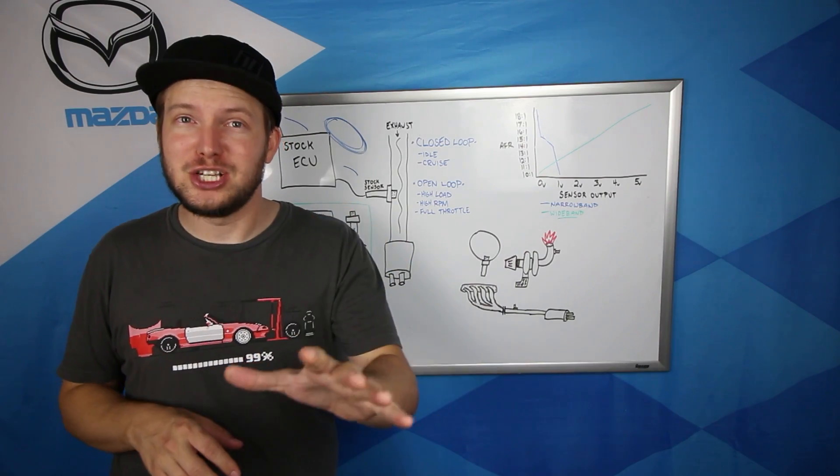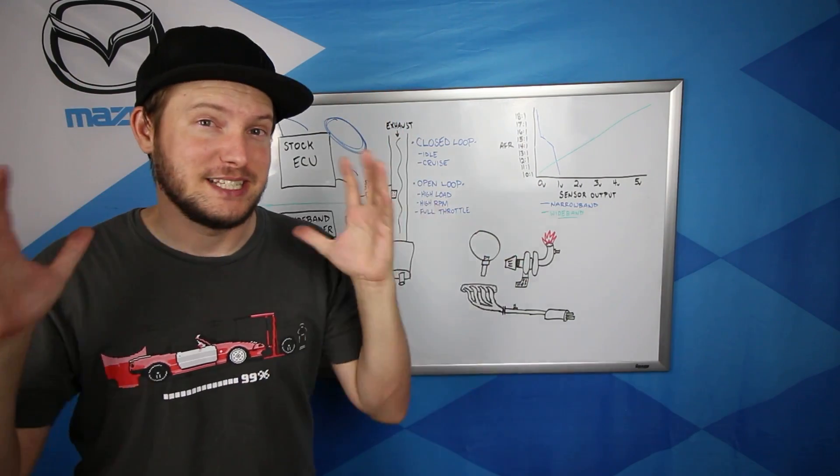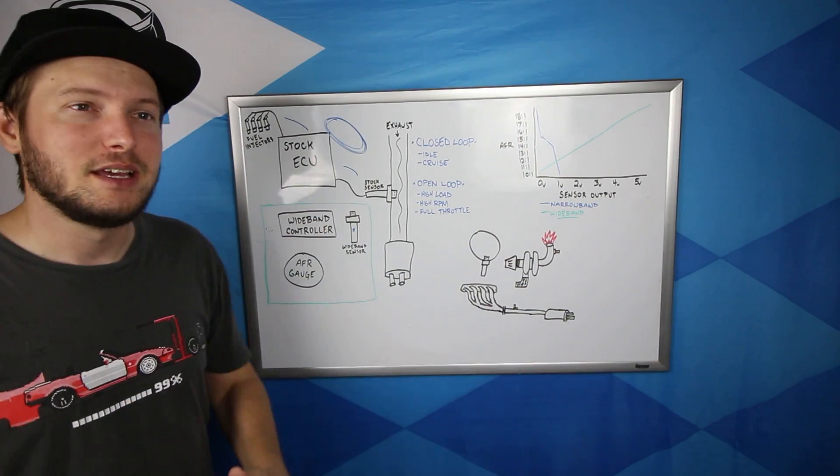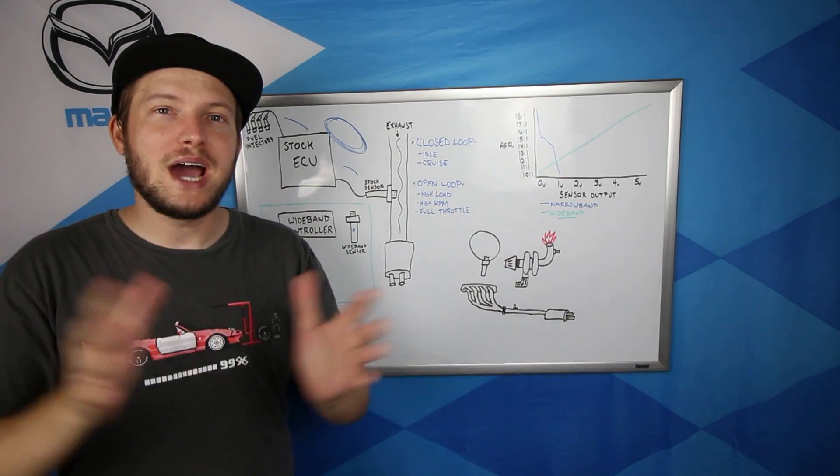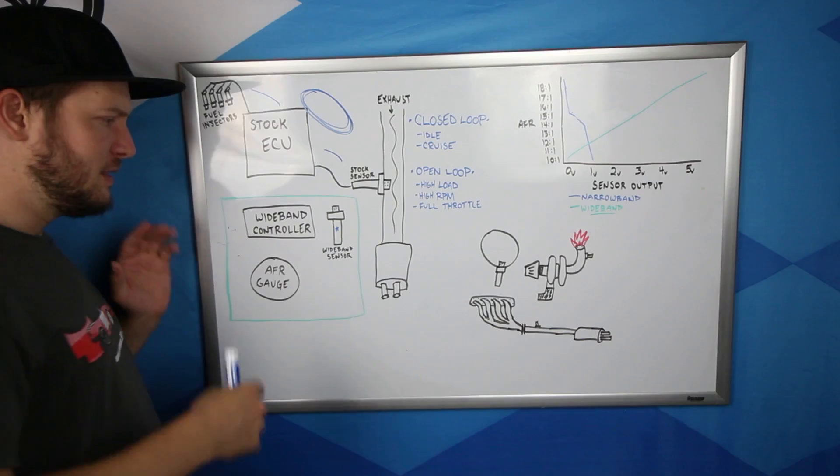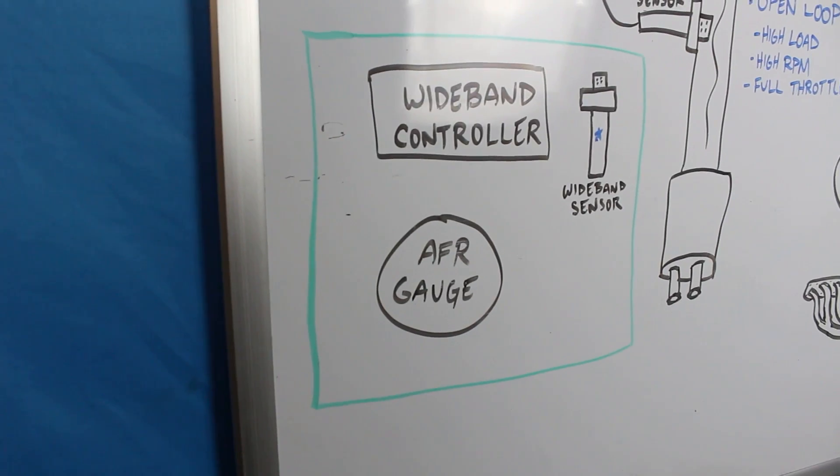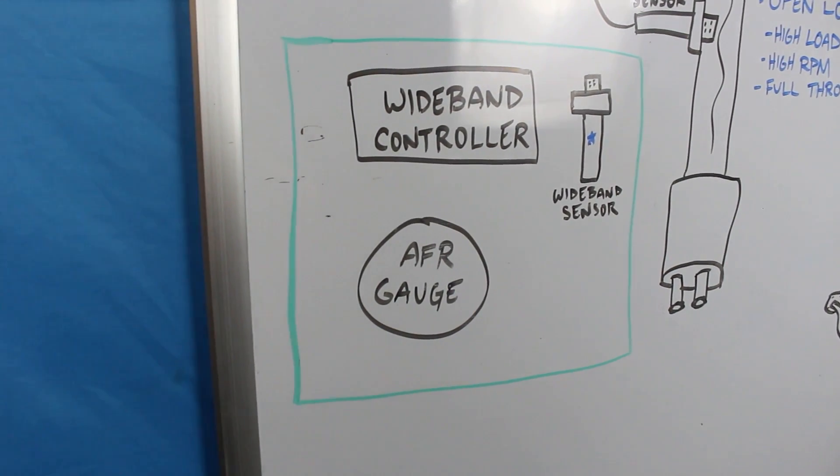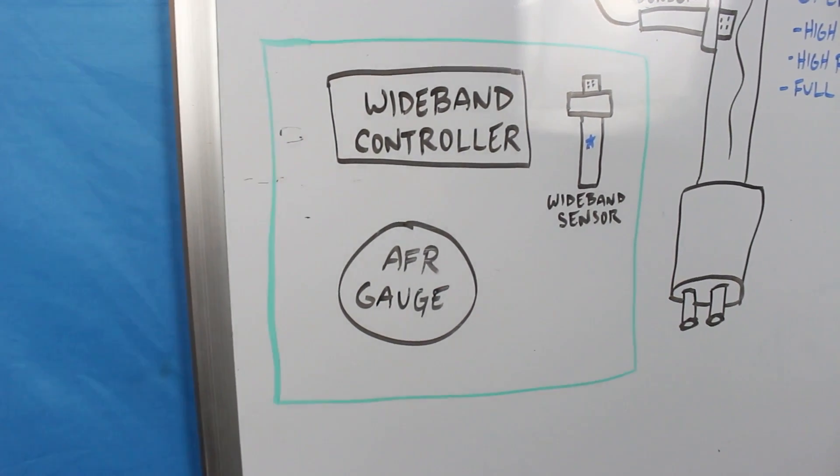It's all right if you're a little lost right now. We're going to start making sense of all this stuff in just a second. Let's look at what a wideband system consists of. The main components of the system here are a wideband oxygen sensor, an AFR gauge, and a wideband controller.